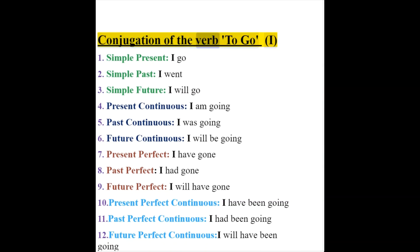Conjugation of the verb to go. I. 1. Simple present: I go. 2. Simple past: I went. 3. Simple future: I will go.